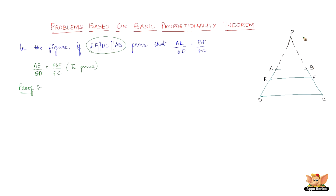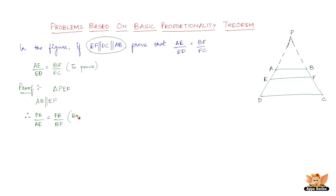Let us consider triangle PEF. In triangle PEF, we can clearly say that AB is parallel to EF. Since a line parallel to one side cuts the other two sides, by the basic proportionality theorem, we can establish that PA by AE equals PB by BF.